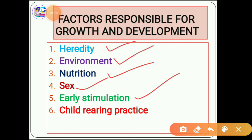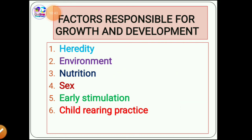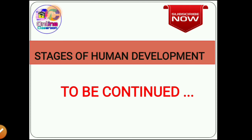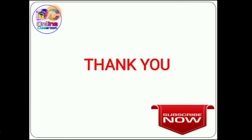The last factor is child rearing practice, which plays a very important role. It creates a sense of responsibility, emotional control, and personal and social adjustment in an individual. With this, we have come to the end of this topic. In the next session, we are going to talk about the stages of human development. If you liked this video, please press the like button.